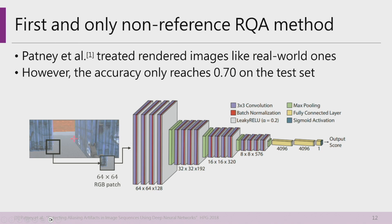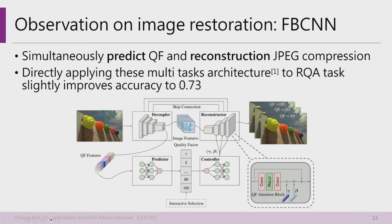The first and only non-reference RQA method for aliasing detection was proposed by Pandian et al. at HPG 2018. They proposed a simple CNN model and treated the rendered image like real-world cases, achieving accuracy of 17% on our testing set. Since there is only one aliasing detection paper, we had to explore other areas for inspiration. We found a method in image restoration called FBCNN, which focuses on JPEG compression artifacts using a multitask architecture. Adopting this architecture to our task slightly improved accuracy to 73%.